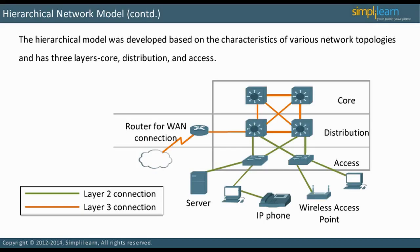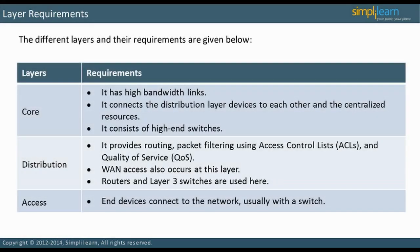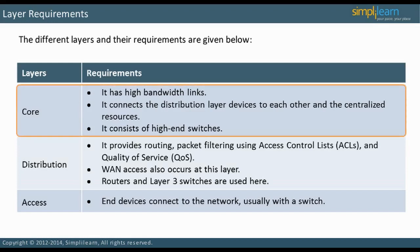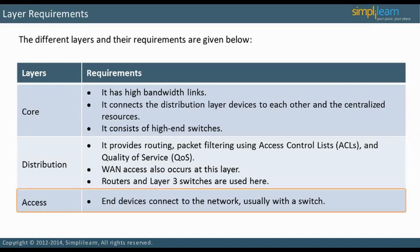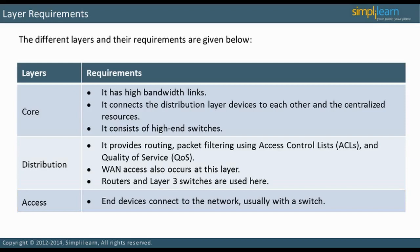The different layers and their requirements are as follows. The core layer has high bandwidth links; it connects the distribution layer devices to each other and to centralized resources such as database servers, and consists of high-end switches. The distribution layer provides routing, packet filtering using access control lists (ACLs), and quality of service (QoS). Wide area network (WAN) access also occurs at this layer, and routers and layer 3 switches are used here. The access layer is where end devices connect to the network, usually with a switch. Let us now focus on an important layer 1 and layer 2 technology — Ethernet.